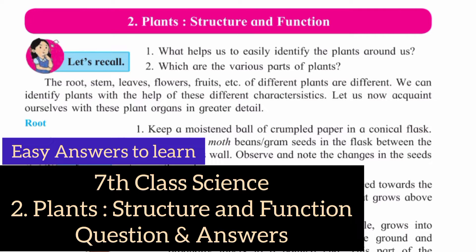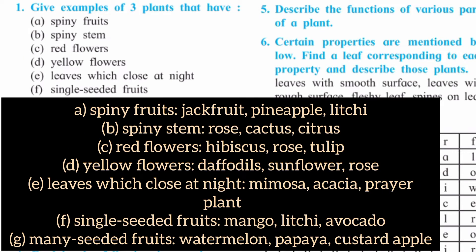Let us solve the question answers from exercise. Question number 1: Give examples of 3 plants that have: a) spiny fruits, b) spiny stem, c) red flowers, d) yellow flowers, e) leaves which close at night, f) single seeded fruits.